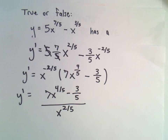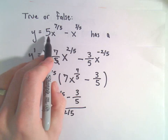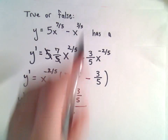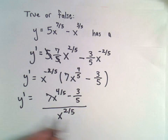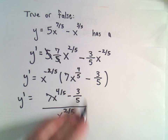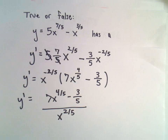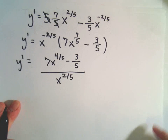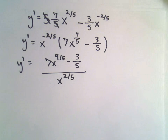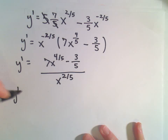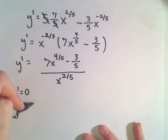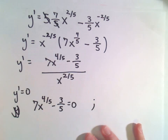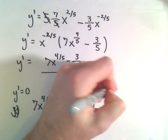Now we have to find critical points. Our original function, 5x to the 7/5 minus x to the 3/5, is continuous for all values of x. So whatever numbers we find by setting the derivative equal to 0 or undefined are definitely in the domain of the original function, meaning any points found are in fact critical points. For the derivative to equal 0, the numerator equals 0: 7x to the 4/5 minus 3/5 equals 0.